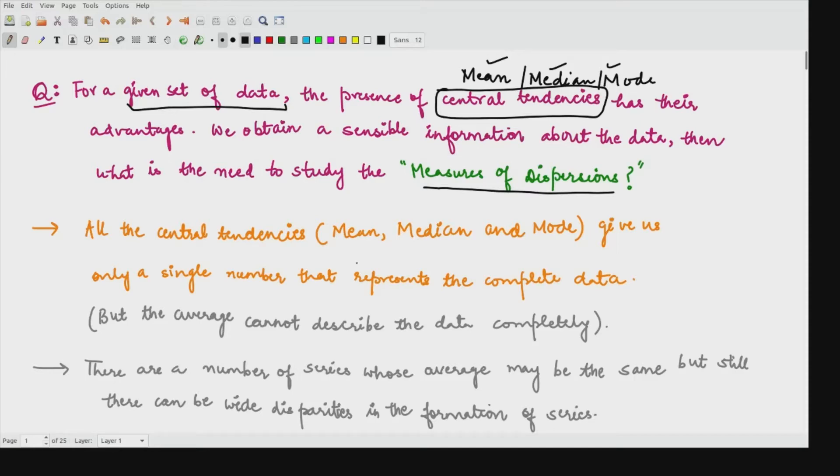The answer to this lies in the fact that all the central tendencies, either it is mean or median or mode, they give us a single number from which we can estimate this is the average for my given data and this is the median and this is the mode that represents the complete set of data. But they are saying this average cannot completely define the data.